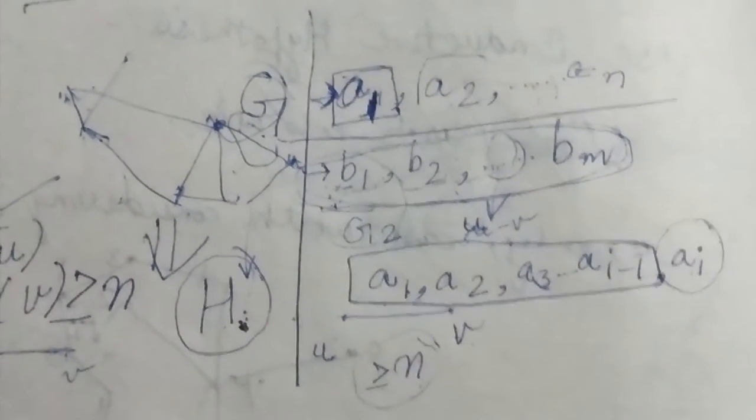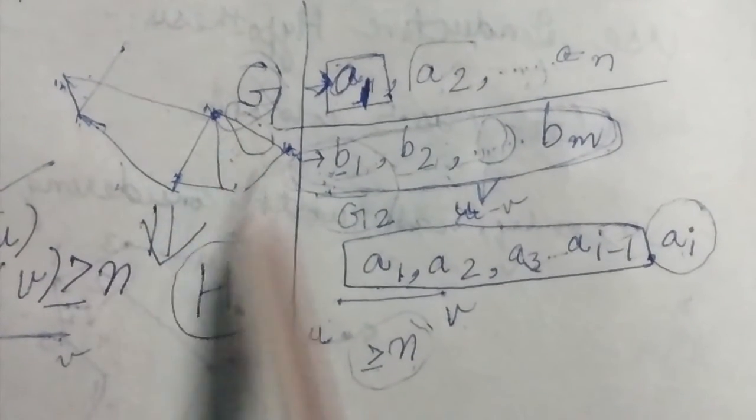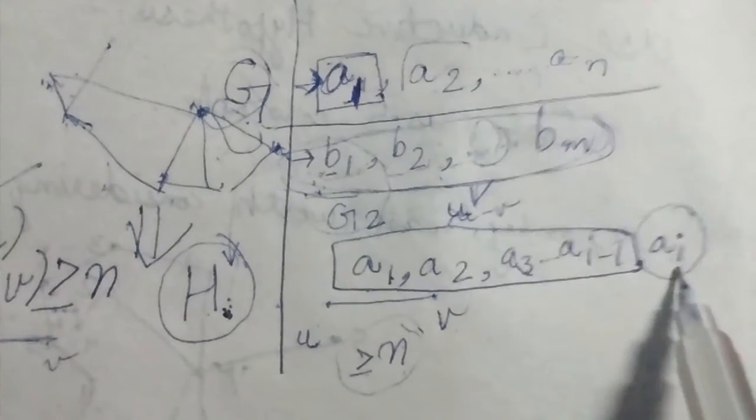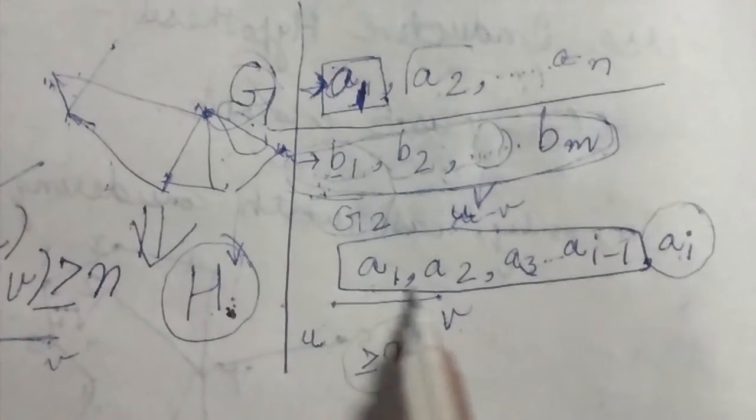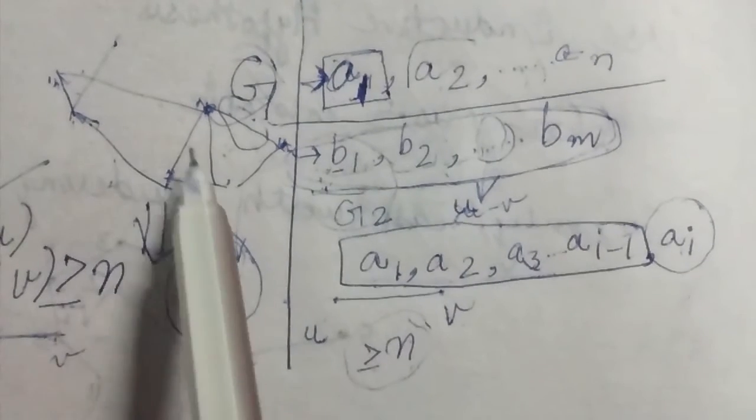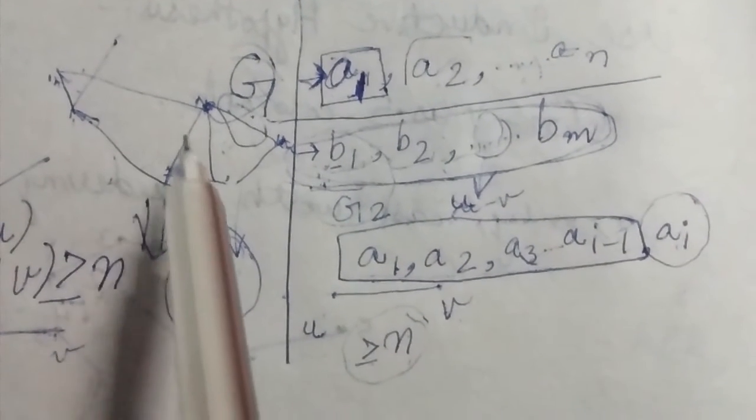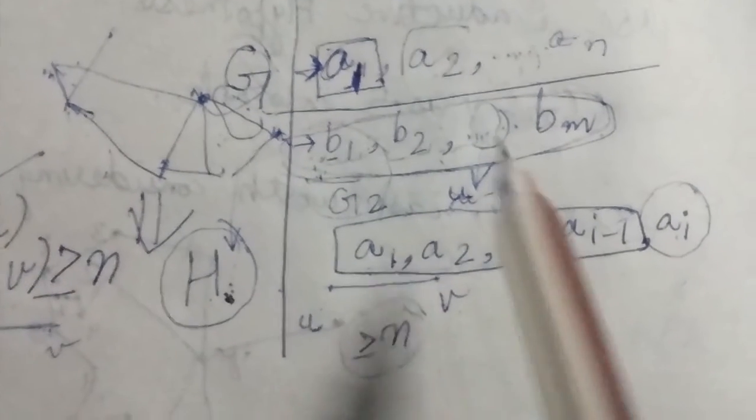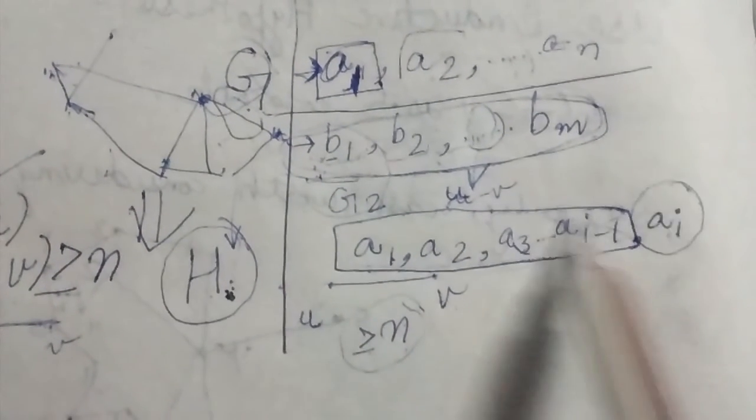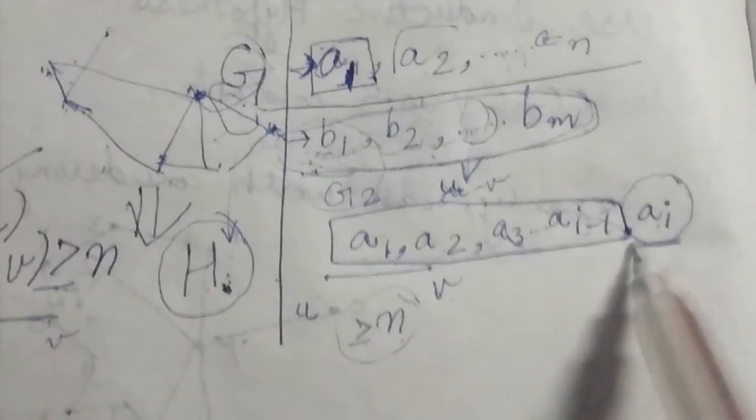So either the graph's initial state prompts me to add ai, or adding these edges increased the degrees in such a way that I can add ai now. So it's either of the two things. So after I have added all these, I am eligible to add ai.